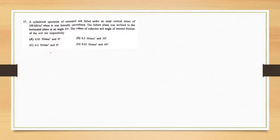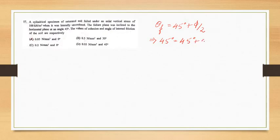Firstly, we know that theta_f, which is the failure plane angle, is given as 45 degrees plus phi by 2, where phi is the angle of internal friction. Now this value of theta_f is given as 45 degrees, so we have: 45 = 45 + phi/2, therefore phi is equal to 0 degrees.